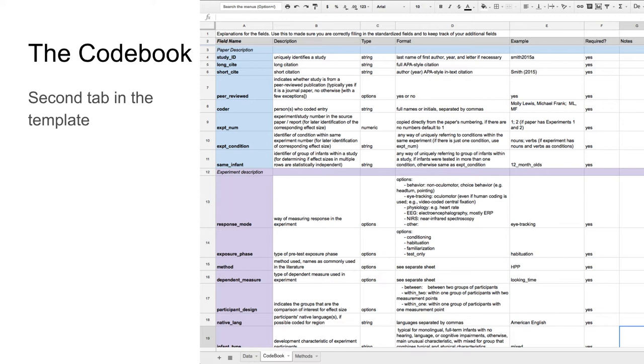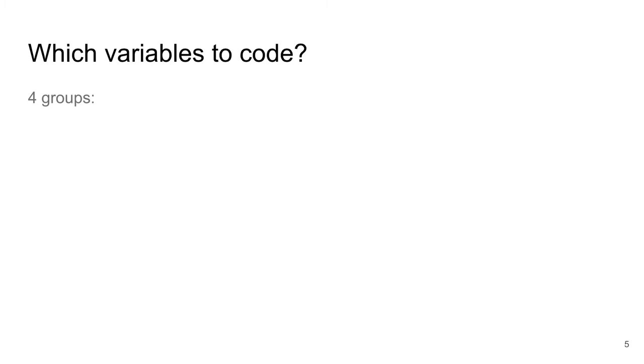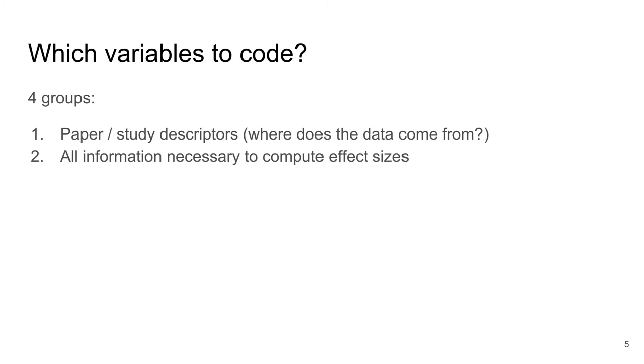There are four main groups of variables that you should code: paper study descriptors, all information necessary to compute effect sizes, domain specific common variables, and topic specific variables. We will describe them in detail in a second.